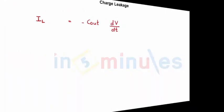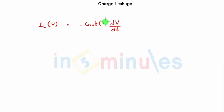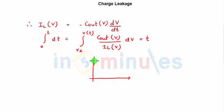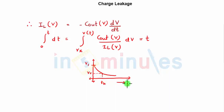In reality, leakage current is a function of voltage, and so is C_out. The approximation used so far assumes both are constant, but technically the hold time integral becomes: ∫(C_out(V) / I_L(V)) dV = t. When simulated in real time, the voltage does not decrease linearly but follows a non-linear decay curve — starting at V1 and reaching V_x at the hold time t_H.